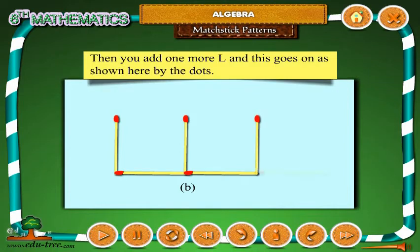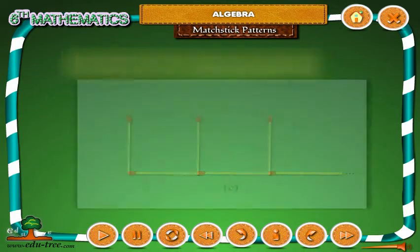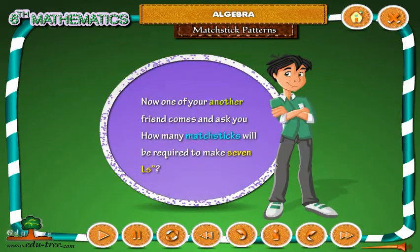Then you add one more L and this goes on as shown here by the dots. Now, one of your friends comes and asks you, how many matchsticks will be required to make 7 L's?